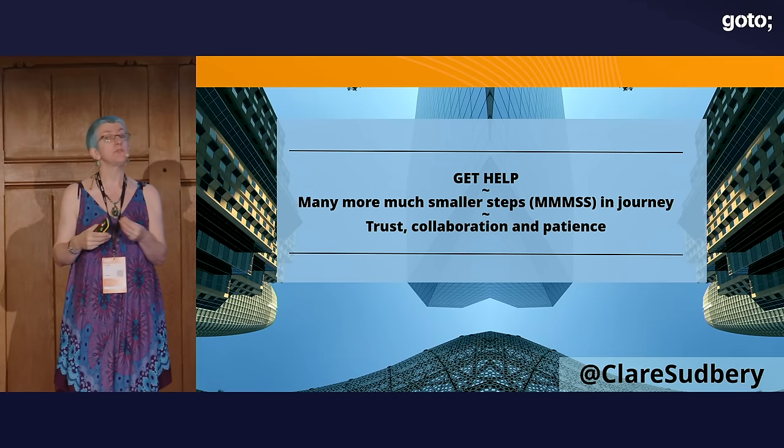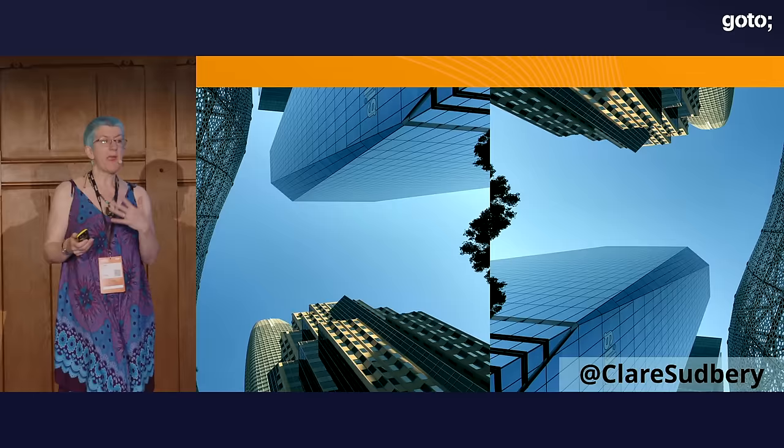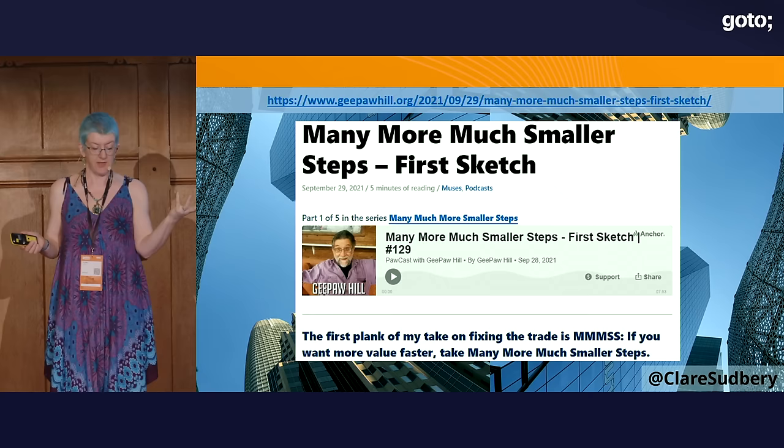They decide to get help — maybe an external technical coach, maybe someone hired permanently, maybe someone within the company who has the skills to help this particular team. One of the first things the person they bring in does is encourage them to use the MMMSS principle in their journey towards trunk-based development. The idea is: don't do a big bang change. Move towards that goal in small steps, and as a result, they build the trust back up within the team.